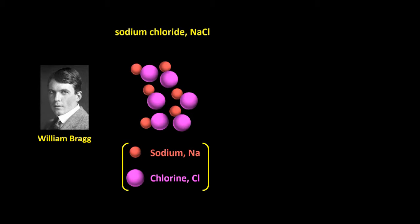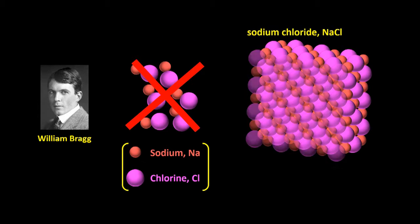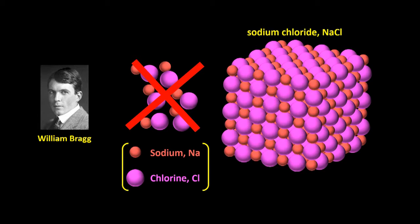NaCl, he reported, is not made of individual molecules of sodium atoms bonded to chlorine atoms. In fact, it's made of rows and rows of alternating sodium and chlorine atoms arranged into a giant so-called lattice.